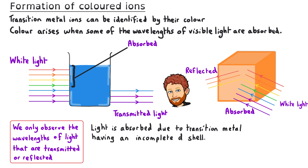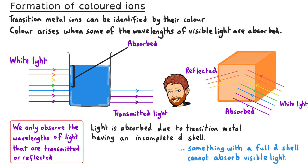This absorption is due to the transition metal having an incomplete D subshell. Something that does not have an incomplete D subshell cannot absorb visible light, and so will not appear to be coloured.